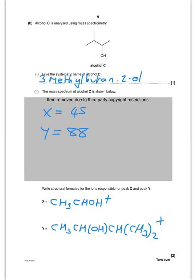So giving me alcohol C now. And I'm going to name it. So let's have a look. What's my longest chain? Well that's four carbons long. So butan-2-ol. And on carbon number three there's a methyl group. So 3-methylbutan-2-ol.